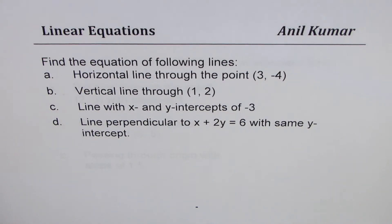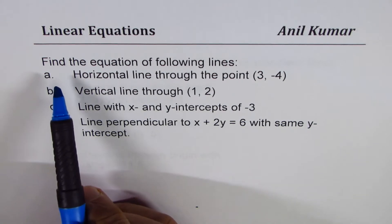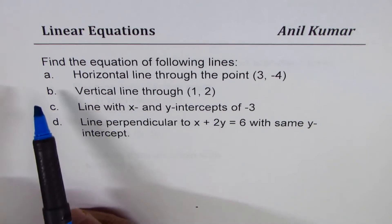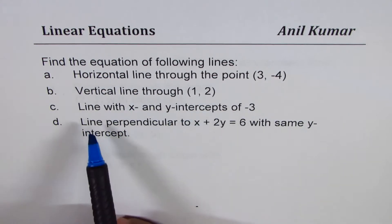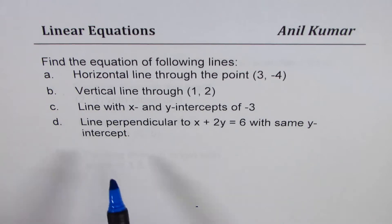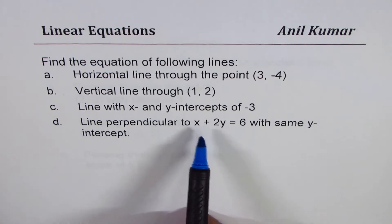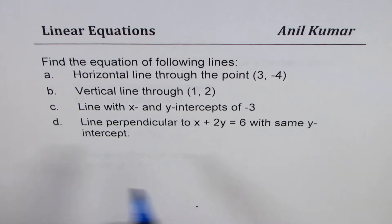I'm Anil Kumar and let me thank all my subscribers and those who watch my channel for their contribution in making this one of the best. Here is a question for my subscriber who wants to understand how to write the equation of a line in different situations. I'm taking up 7.4 on this page and 3 to follow. The question is: find the equation of the following lines — a horizontal line through the point (3, -4), a vertical line through (1, 2), a line with x and y intercepts of -3, and a line perpendicular to x + 2y = 6 with the same y-intercept.